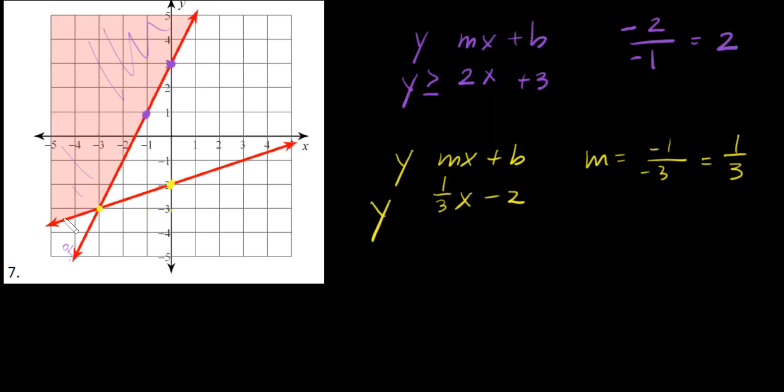And notice that we're shading all of this up here, which is above, and it is equal to. So we have y is greater than or equal to one third x minus 2, and y is greater than or equal to 2x plus 3. And that's our final solution. Okay, good job.